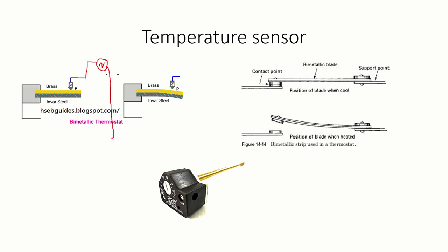The switch is connected to an AC supply which is connected to a heating coil. At low temperatures, the circuit is complete and the heating coil heats up. Once the temperature reaches the set point — say 38 degrees Celsius for a geyser — the bimetallic strip bends and opens the switch, stopping current flow through the heating coil and ending the heating process.